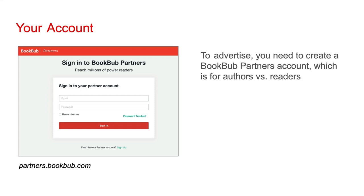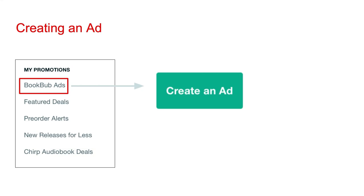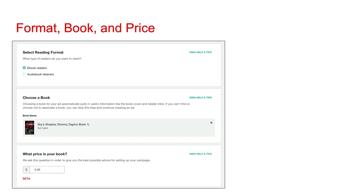To run display ads or apply for a featured deal, you need to create a BookBub Partners account, which is for authors versus readers. To do this, go to partners.bookbub.com. Once you're logged into your account, select BookBub Ads, then Create an Ad. First, you're going to be asked to choose a reading format — go with e-book readers. If you happen to have an audiobook version, you might want to try advertising it on BookBub, however this lesson does not concern audiobook advertising.